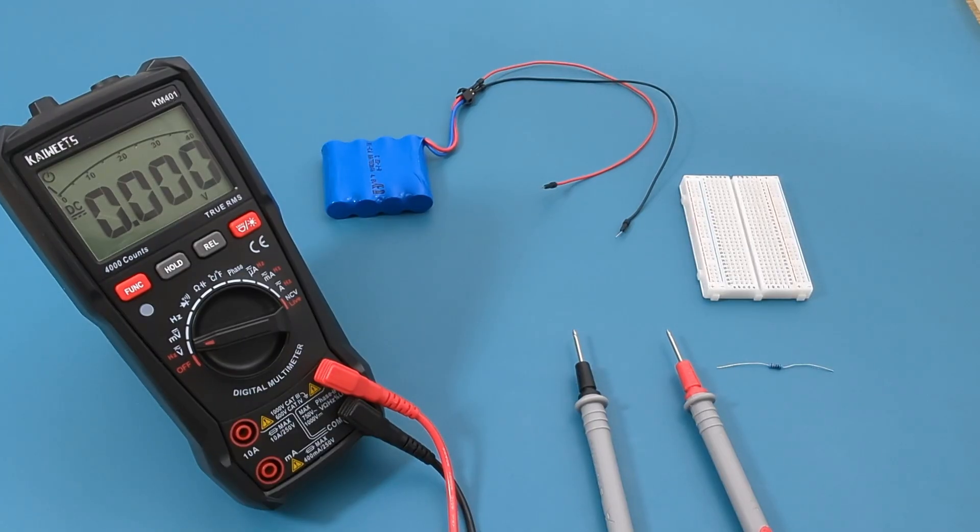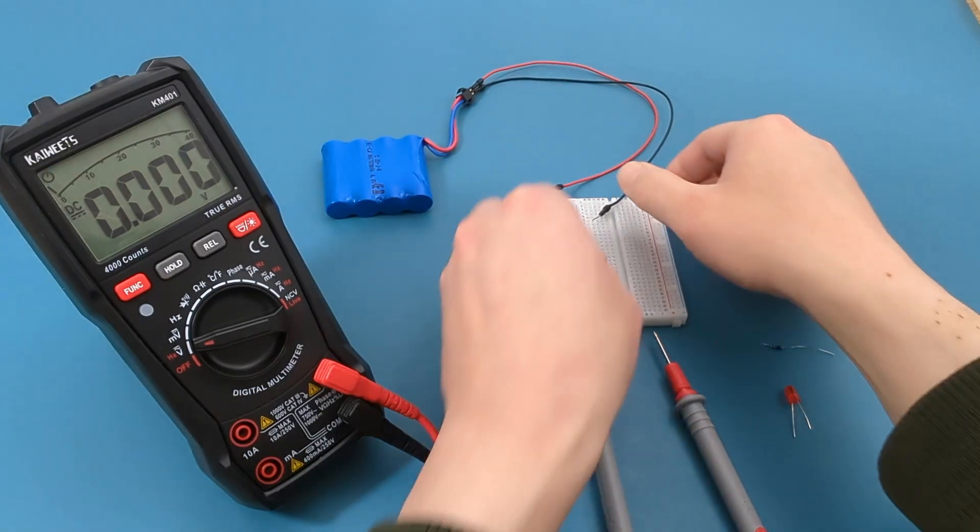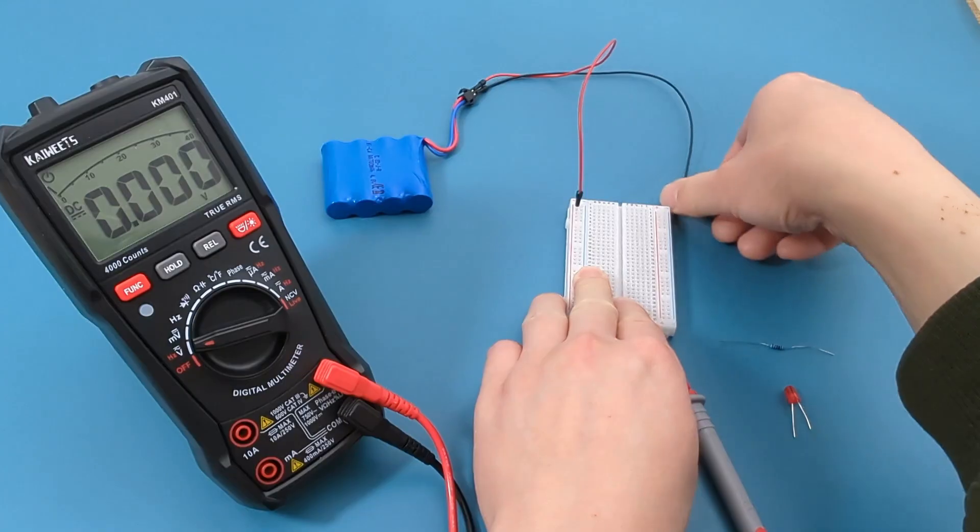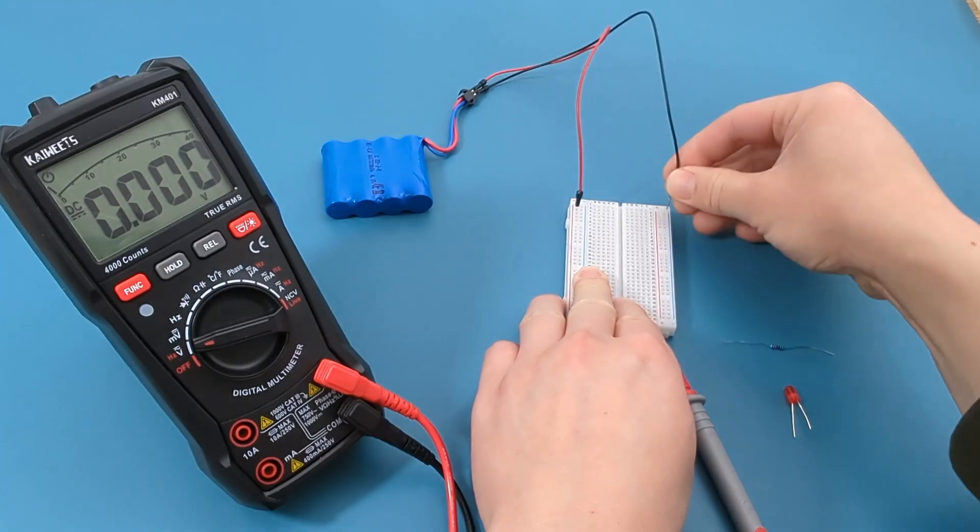To create the circuit, I'm going to use the help of a breadboard. Connect the red jumper wire to the positive end of the breadboard. Connect the black jumper wire to the negative end of the breadboard.